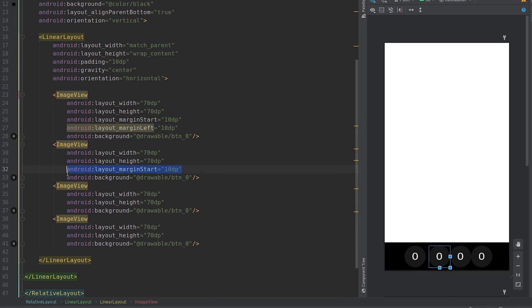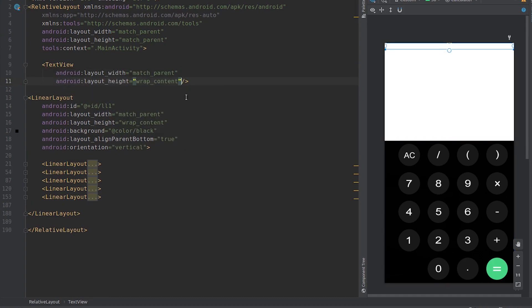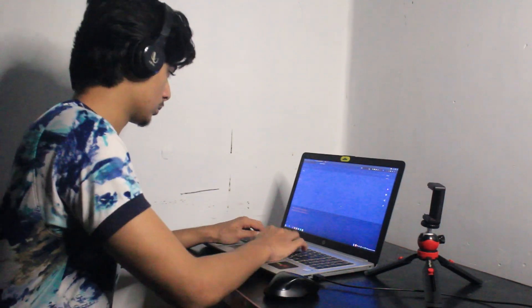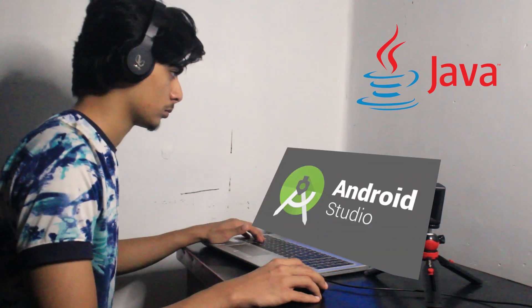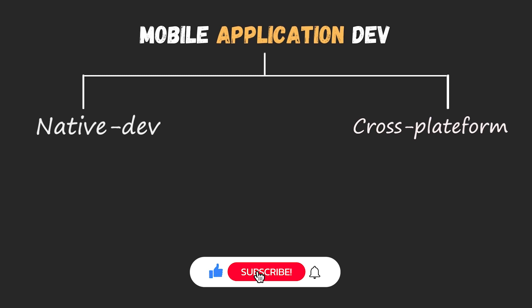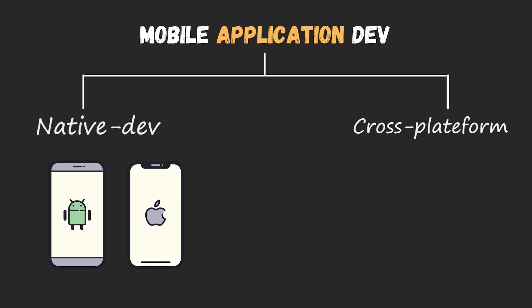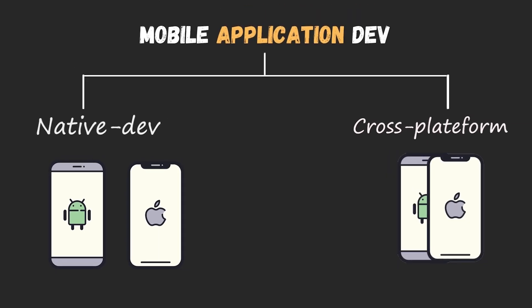I've tried my best to keep it as simple as possible, so if you're a complete beginner or want to get started making Android apps, this video is for you. Before beginning, all I knew was that app development was usually done in Java and required a tool called Android Studio. We can make Android apps in two ways: native and cross-platform. In native development, we write separate code for Android or iOS — Java or Kotlin for Android, Swift for iOS.